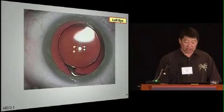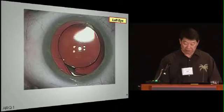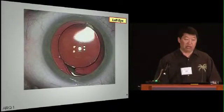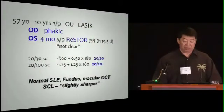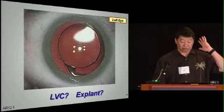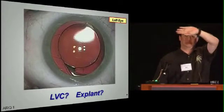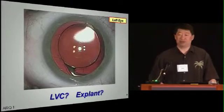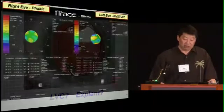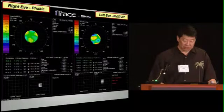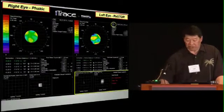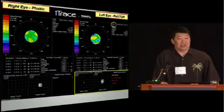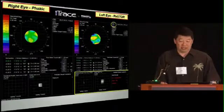This is her lens, and there's actually a radial tear here. So how many people, with this Restore and a radial tear, would enhance this with LASIK? How many would take the lens out? I would say very few would — except when you do the eye trace. The quality of vision here is not very good, and that's alarming, because LASIK will treat the sphere and the cylinder.